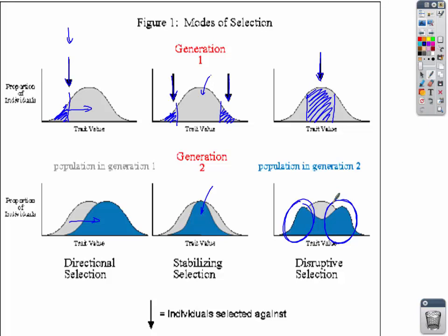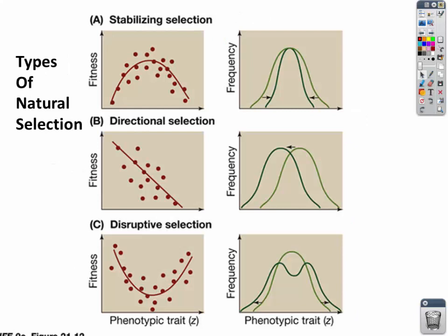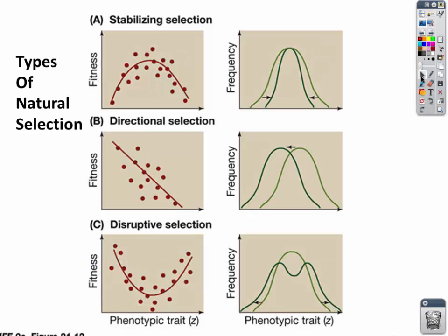This is just a different way to look at it — instead of population, this takes into consideration fitness. In stabilizing, the most fit species are going to be those with the most common part of the trait. In directional selection, the most fit are going to be off to one side of whatever that trait is. And in disruptive, the least fit are going to be the most common trait, and you'll have two separate populations.